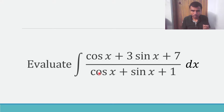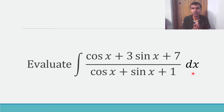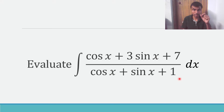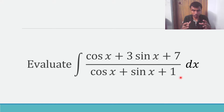Here, we need to evaluate the integral of (cos x + 3 sin x + 7) divided by (cos x + sin x + 1). Whenever you see an integral of the form with cos, sine, and a constant in the numerator and cos, sine, and a constant in the denominator like this form, okay?